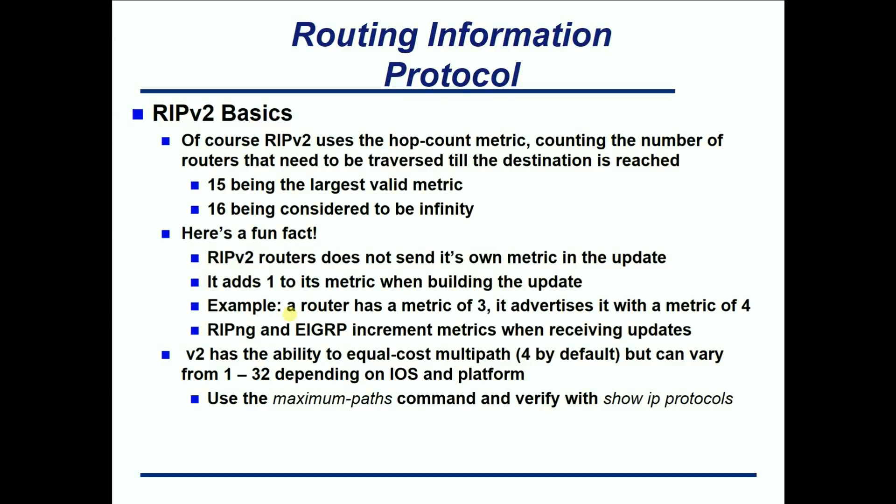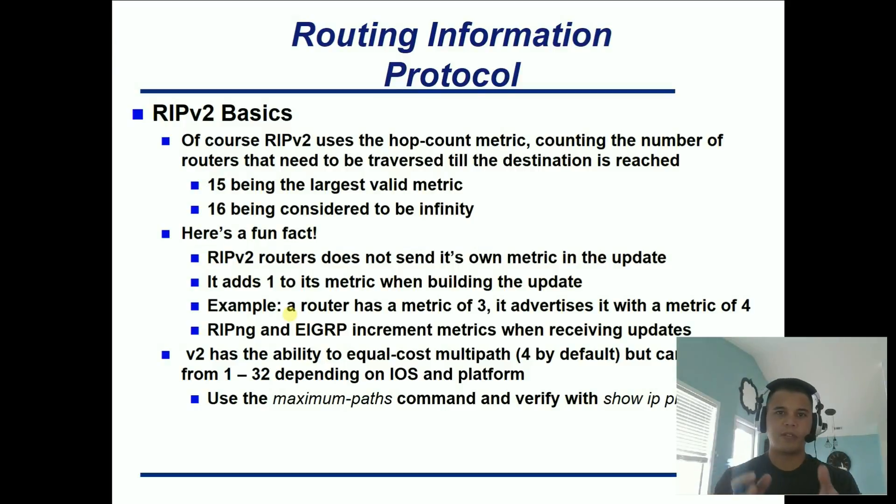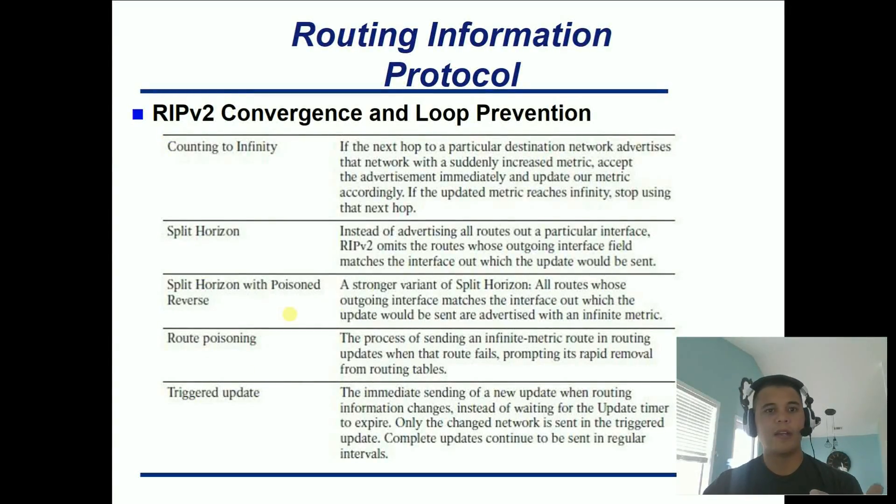Version 2 has the ability to do equal cost multipathing. By default it's set to 4, but depending on the IOS and platform it could be anywhere from 1 to 32. You can alter this and verify it with the maximum paths command under the RIP process, and verify it with show IP protocols. That covers RIP version 2 basics — from what distance vector is, the difference between link state, and all the basic stuff of RIP. I'm going to cut this into different sections and do another video on convergence and loop prevention. I hope this was informative and I'd like to thank you for viewing.